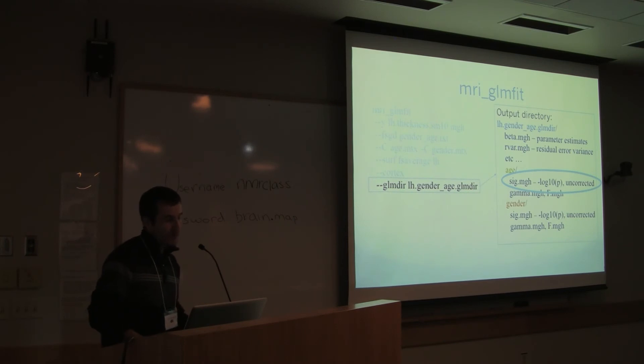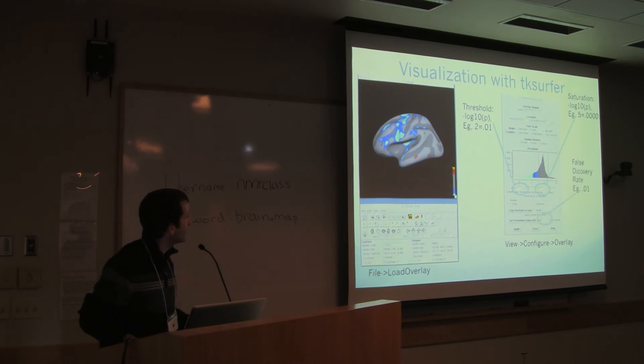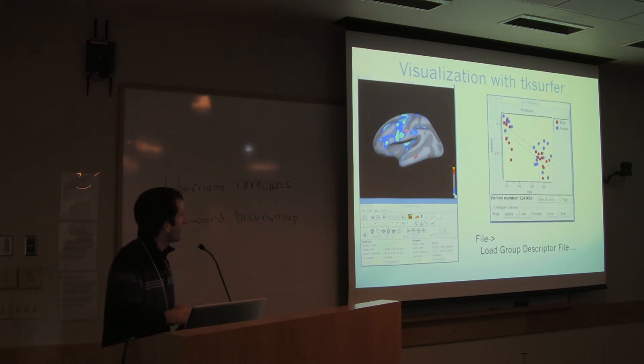So we can visualize these guys with TK Surfer or Freeview. You can also do it with QDEC afterwards, as we'll see. But you can generate this pretty map that we were talking about. Actually, if you load the FSGD file, you can also get the demographics. And you can actually click on the surface and see the distribution of your subjects at that particular vertex, of the thickness at that particular vertex.